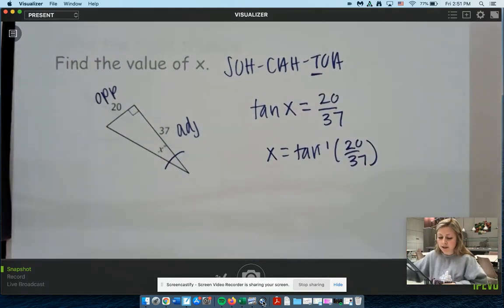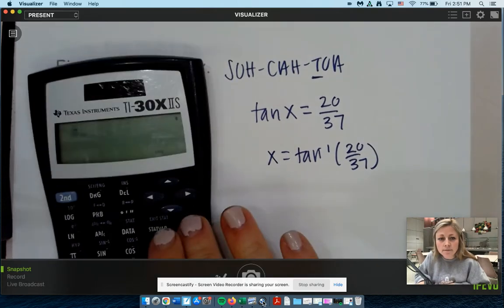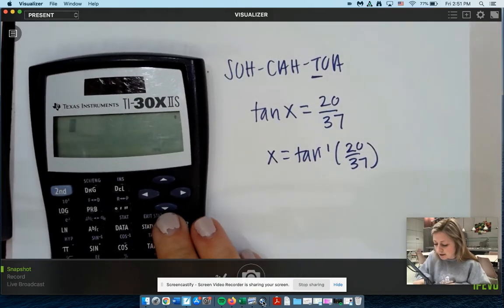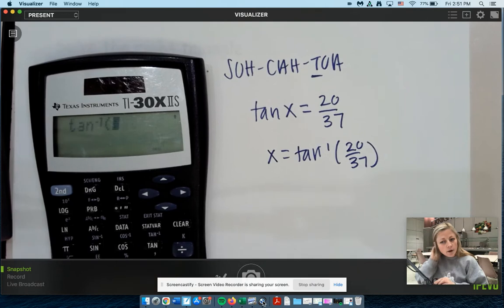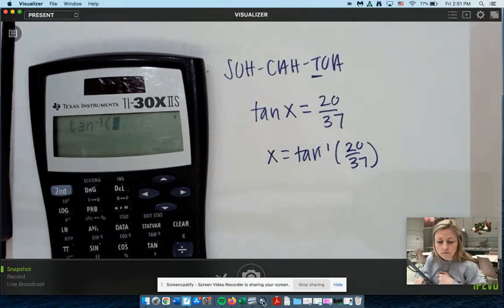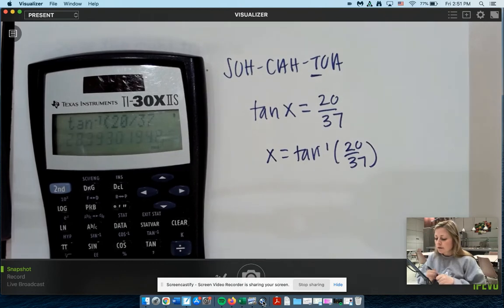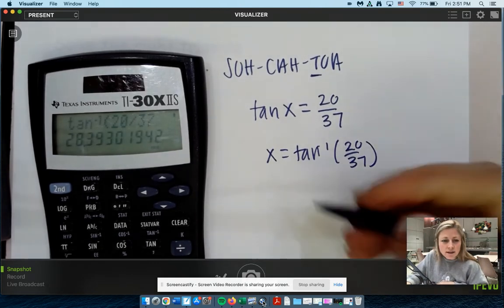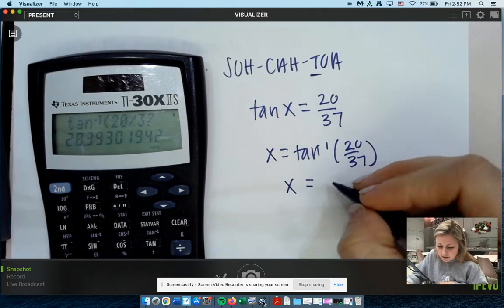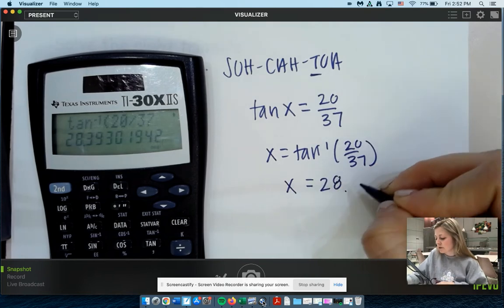So x equals tangent inverse of 20 over 37. Again, it's a calculator. We're kids. It's fun. It's a good time. Second tangent. So I get that negative 1. So x equals 28.4 degrees.